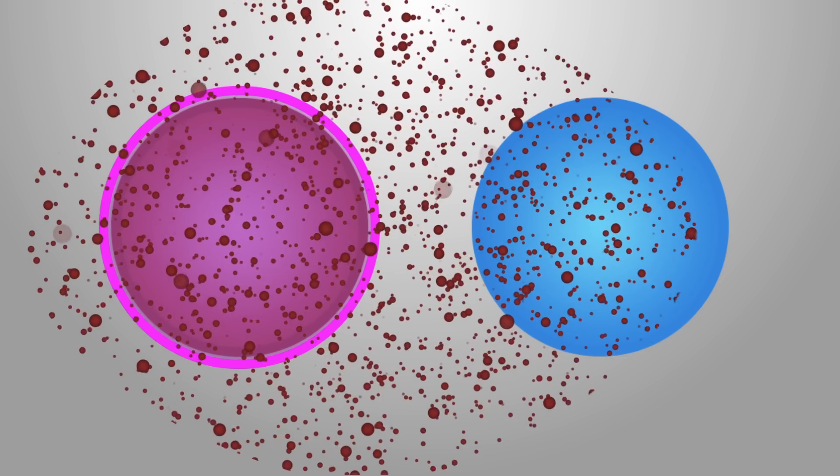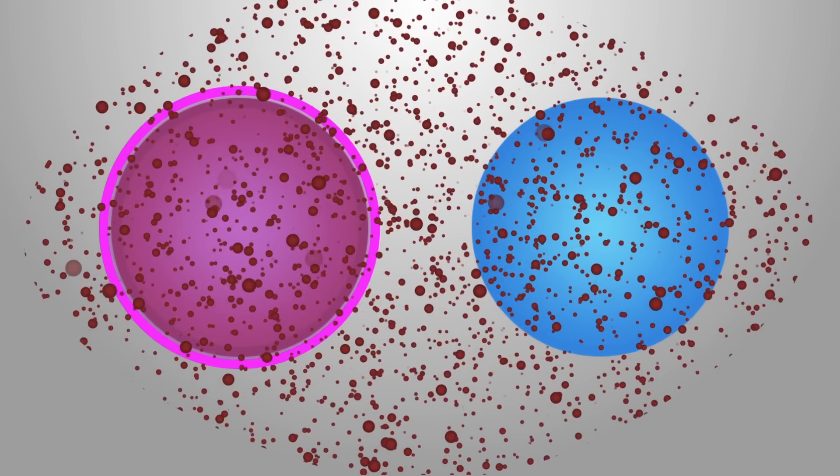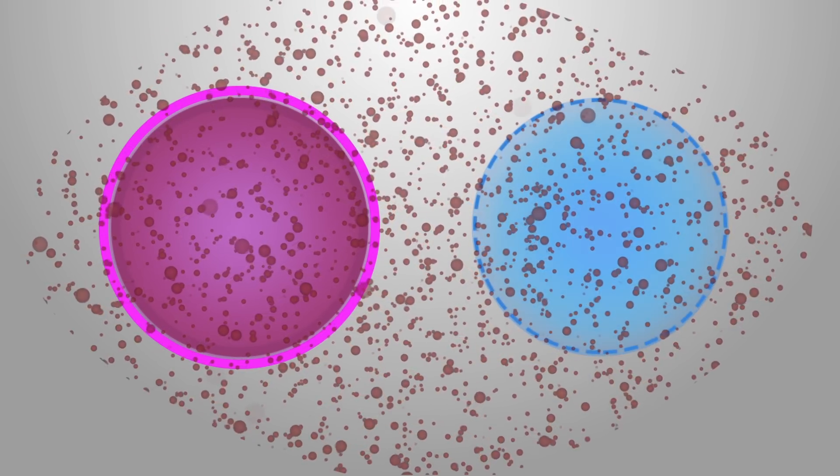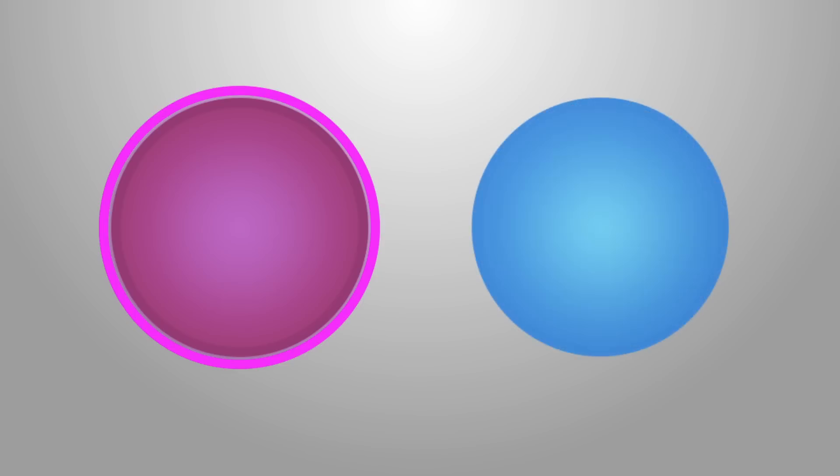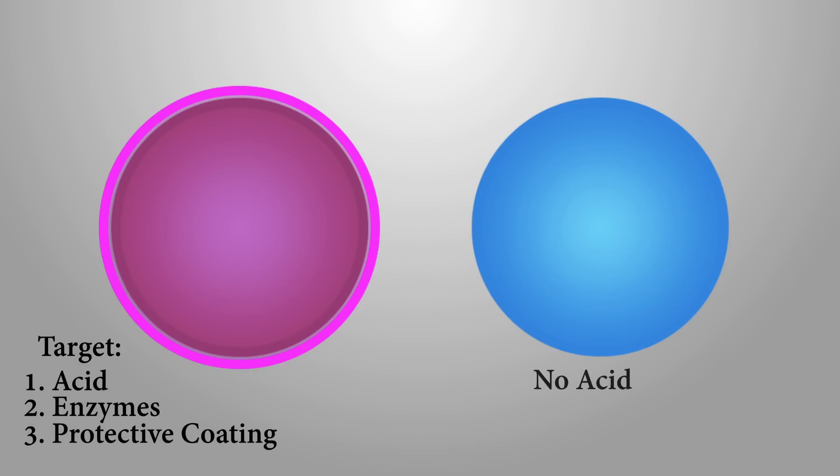The cloud of acid and enzymes excreted by cancer cells dissolves and kills nearby normal cells. Cancer cells produce a unique and destructive environment with the acid, the enzymes, and the protective coating. This environment would make a fantastic target since only cancer cells make it and normal cells do not.